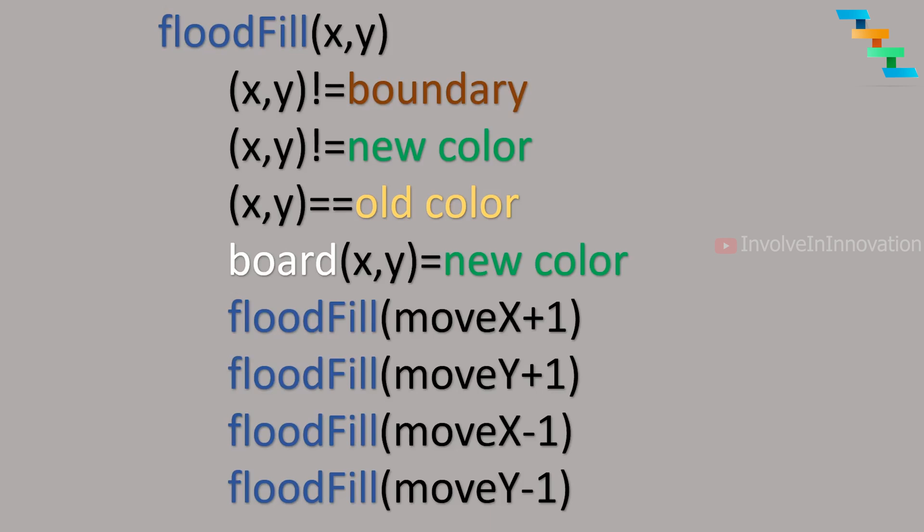First we check whether the given pixel x and y axis is not at the boundary — that is, this point should not lie outside the image. Second, we check whether this x and y axis is not already set to the new color, because if it is already set to the new color we don't need to run the flood fill on that pixel. The next condition is whether the given point is equal to the old color. If all three conditions are met, then only we perform the flood fill algorithm at that given point.